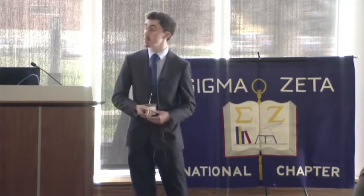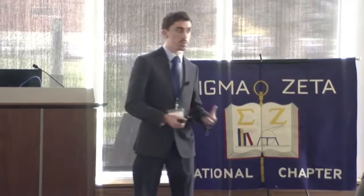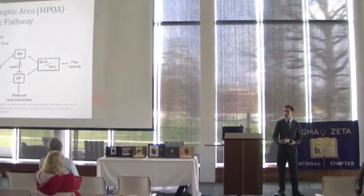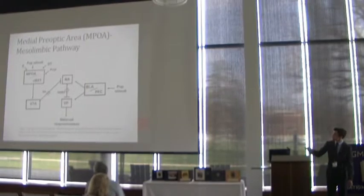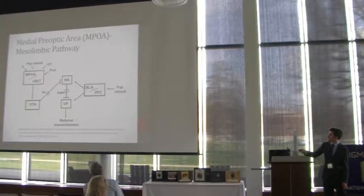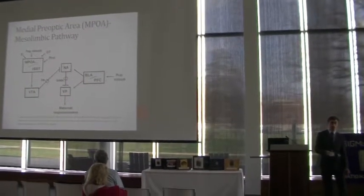Now that we know the two different types of maternal responses, let's start getting to the neuroscience behind them, specifically the voluntary proactive maternal responses. This is the medial preoptic area, or MPOA, mesolimbic pathway — a neural pathway in the brain that controls specifically the voluntary proactive maternal responses. You can see this first box is the MPOA, and from here, through the ventral tegmental area and down, is the mesolimbic pathway.